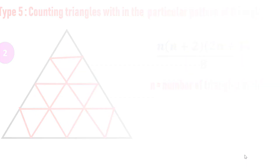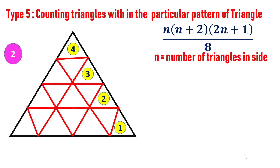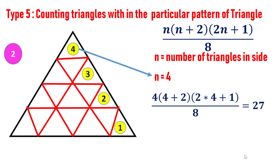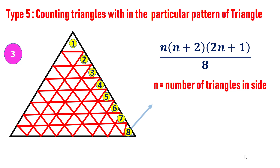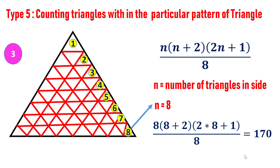In the next figure, number of triangles on a side is four, so n equals four. Substituting: four into four plus two into two into four plus one, divided by eight, which equals 27. So the total number of triangles is 27. In another figure with n equals eight: eight into eight plus two into two into eight plus one, divided by eight, which equals 170. So the number of triangles in this difficult pattern is 170.